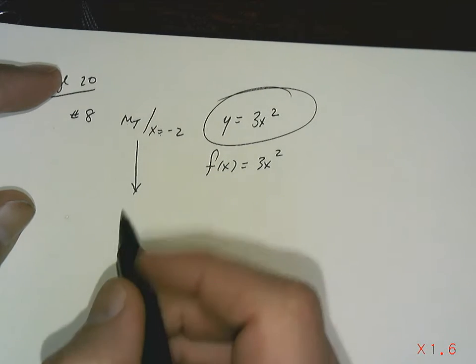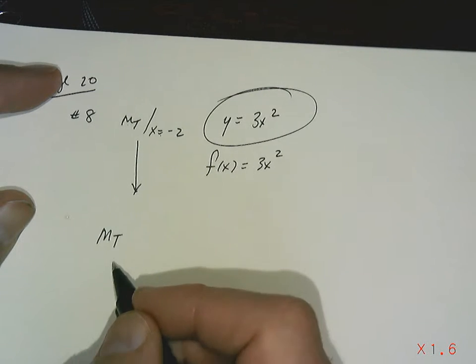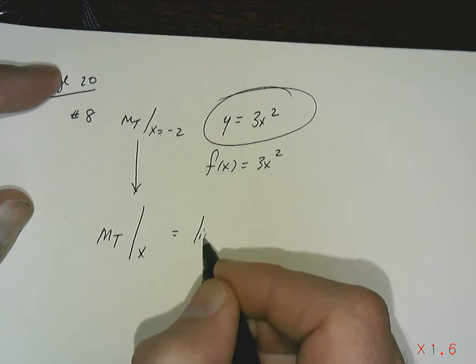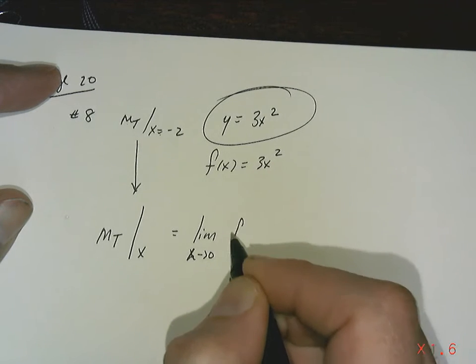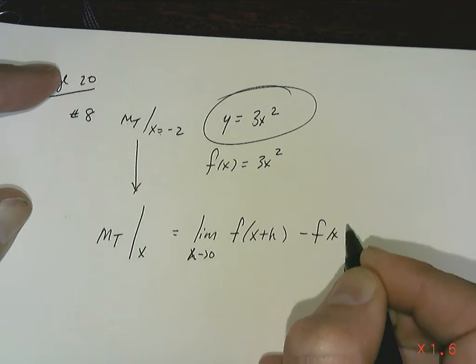First thing that we need to do is know that our definition, the slope of the tangent at any value of x, is equal to the limit as h approaches 0 of f of x plus h minus f of x over h.